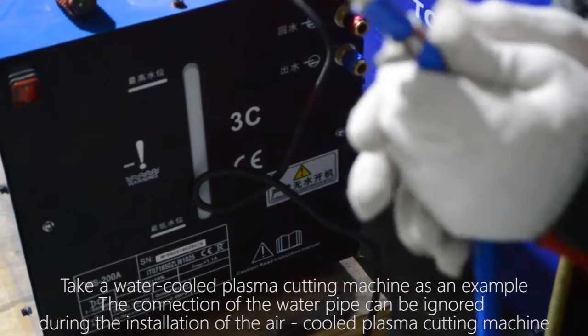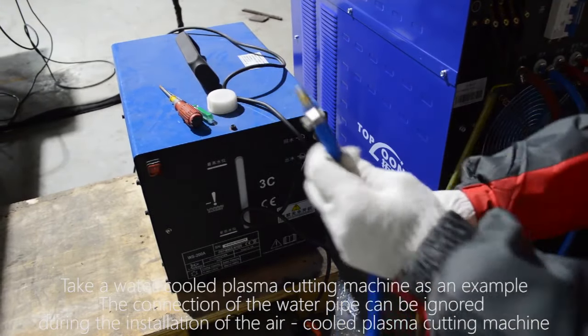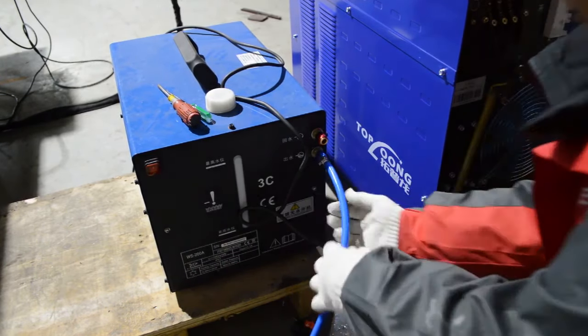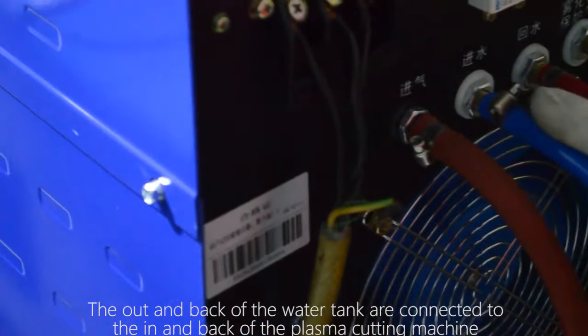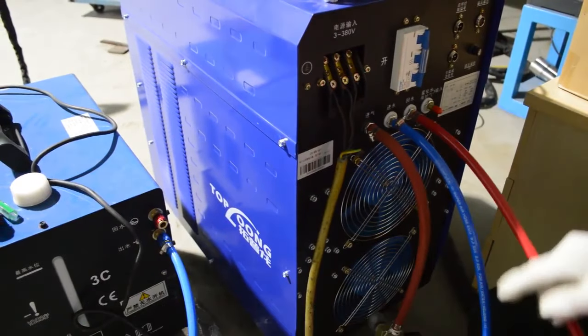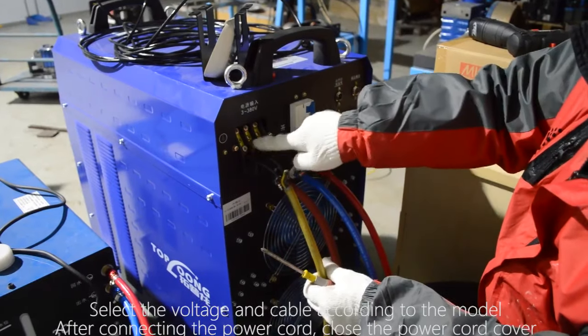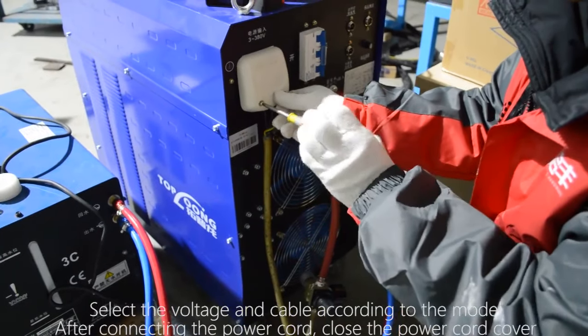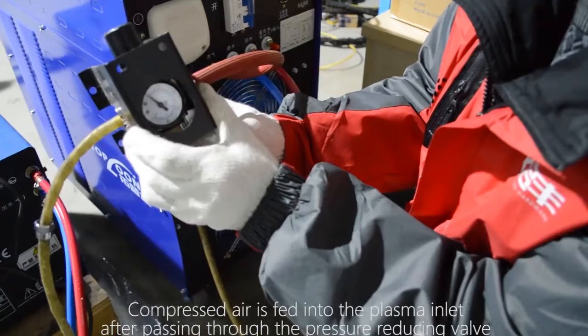Take a water cooled plasma cutting machine as an example. The connection of the water pipe can be ignored during the installation of the air cooled plasma cutting machine. The out and back of the water tank are connected to the in and back of the plasma cutting machine. Select the voltage and cable according to the model. After connecting the power cord, close the power cord cover.